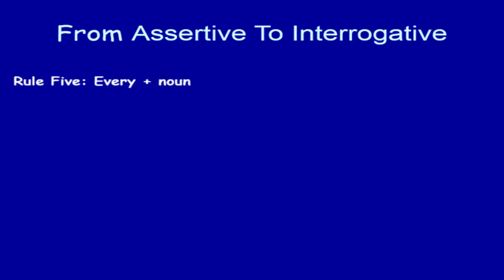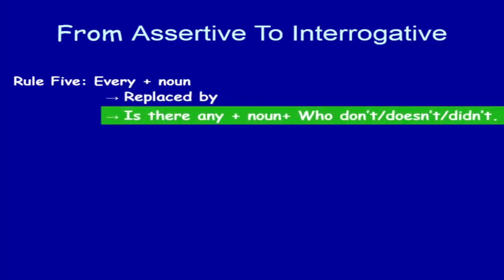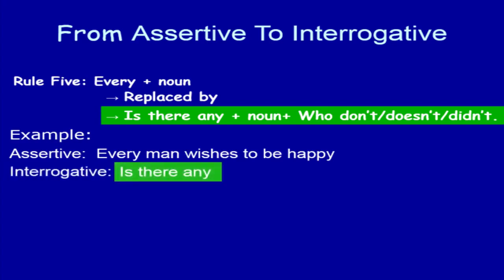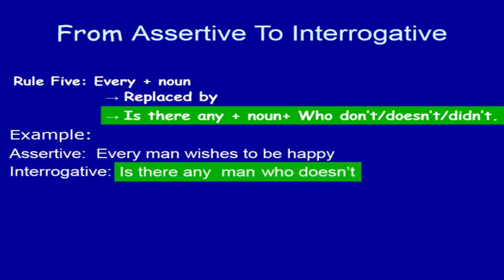Rule number 5. Every plus noun in an assertive sentence — 'Every' plus noun is replaced by 'Is there any' plus noun, followed by 'who does not / do not / did not.' In the assertive sentence, 'Every' is replaced by 'Is there any?' Then write the noun, then 'Who does not' because the subject is third person singular number and the verb is present simple tense. Write the rest part of the sentence and use the sign of interrogation.